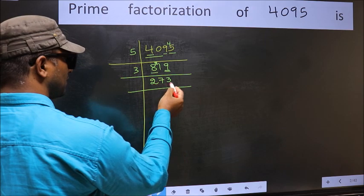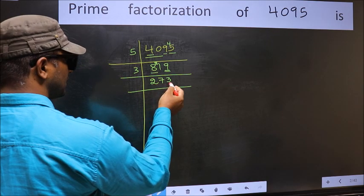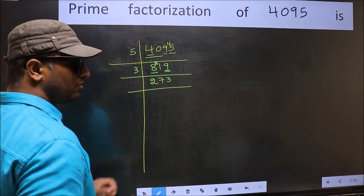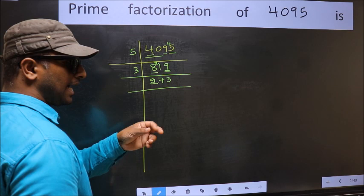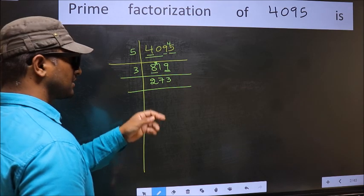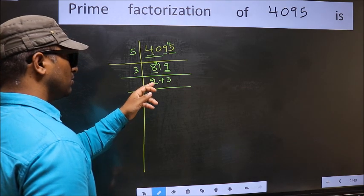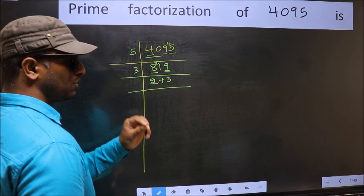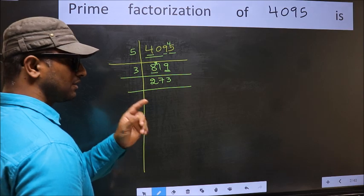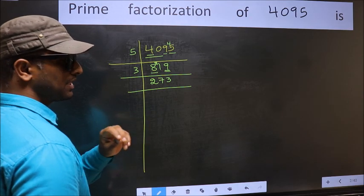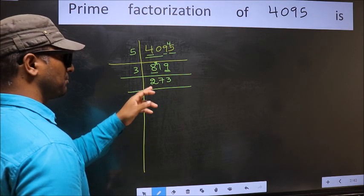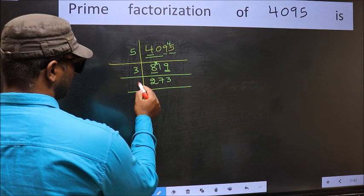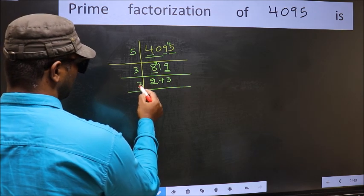Now to check whether this number is divisible by 3 or not, add the digits: 2 plus 7 plus 3 equals 12, and 12 is divisible by 3, so this number is also divisible by 3. Take 3.